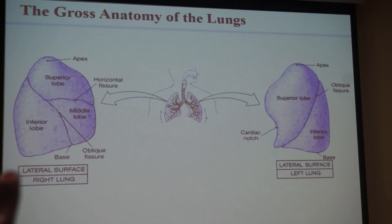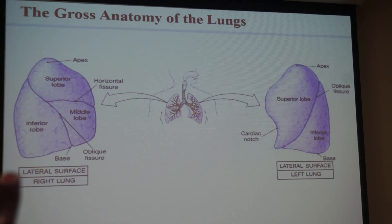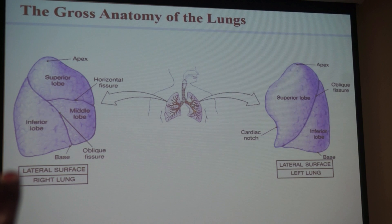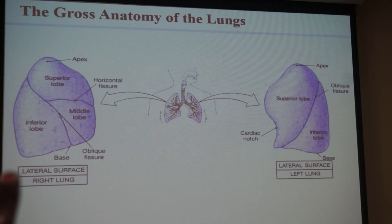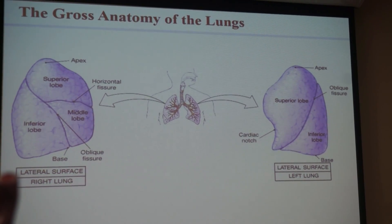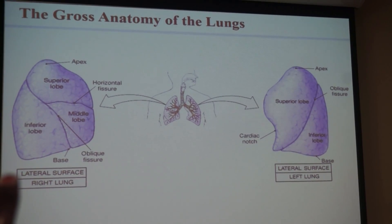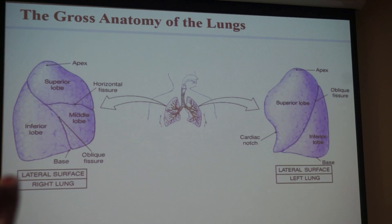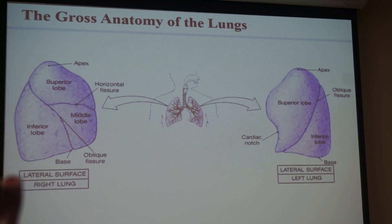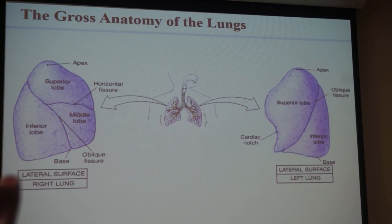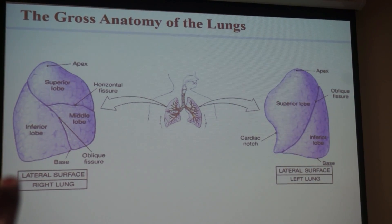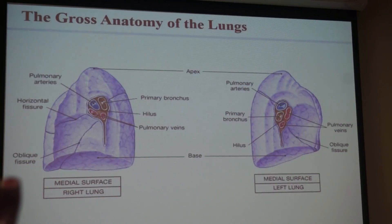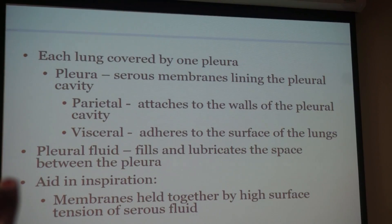Look at the model — you can see the one that has the little notch break. There's a little notch on that left lung, showing where the heart peeps out. That's the only one that has the little notch, making room for the heart.